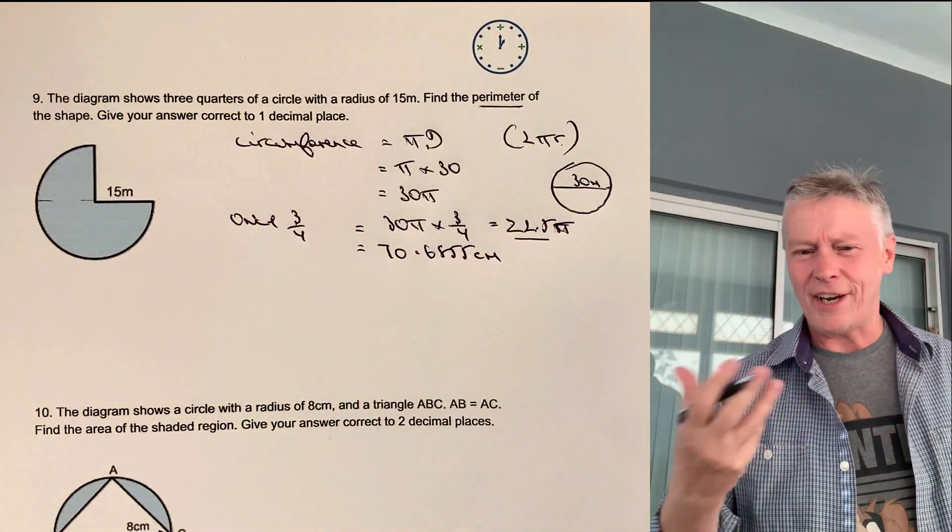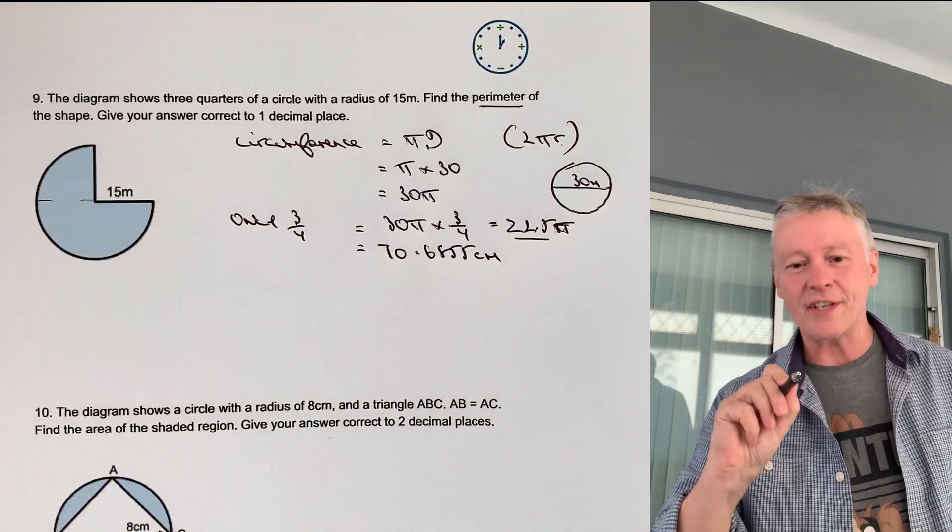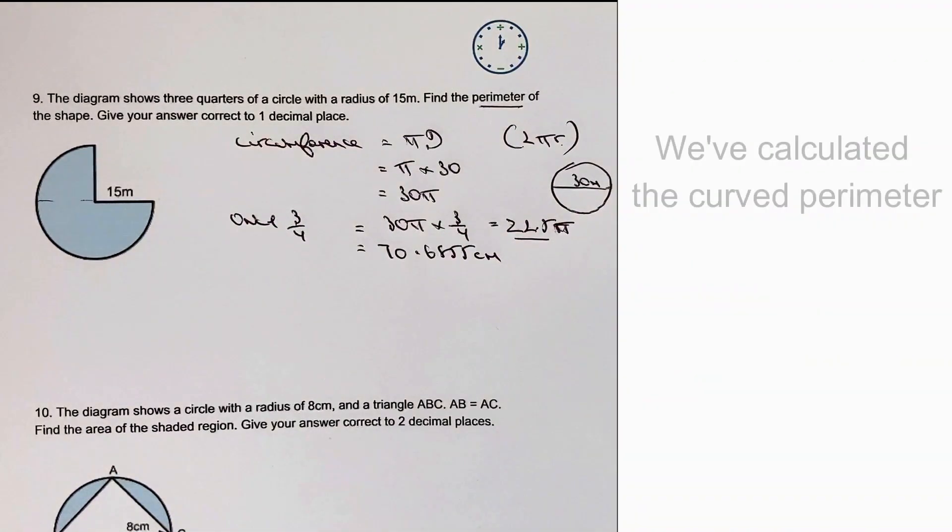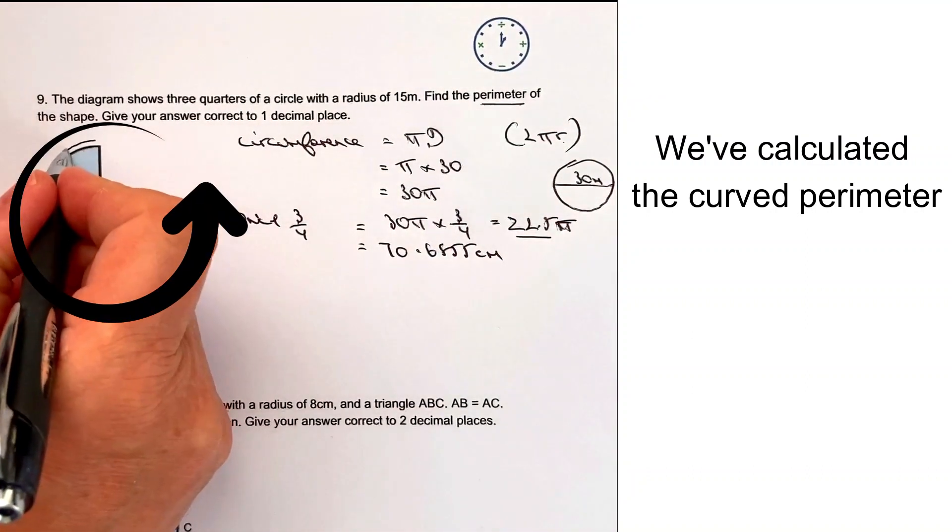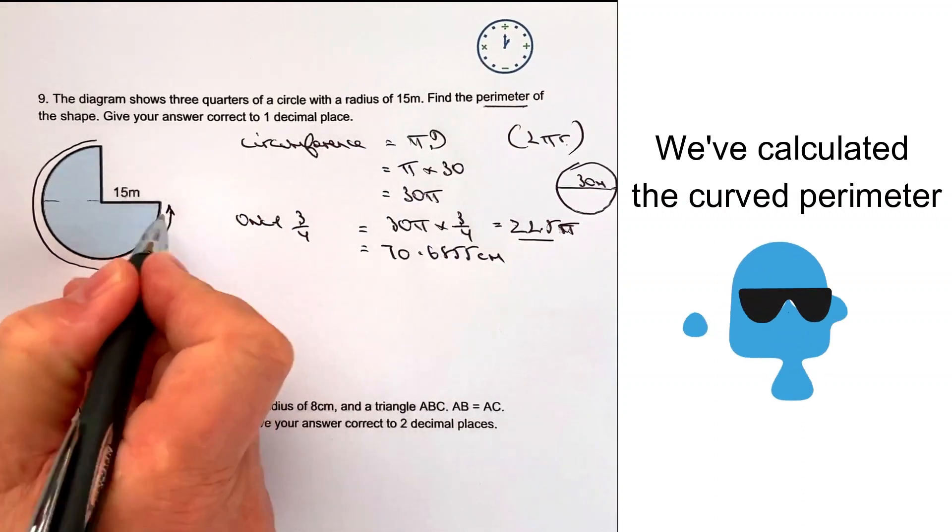Now that 70.6855 centimetres is actually the three-quarters edge of the circle itself. So what we've calculated is going to be this length all the way around here.